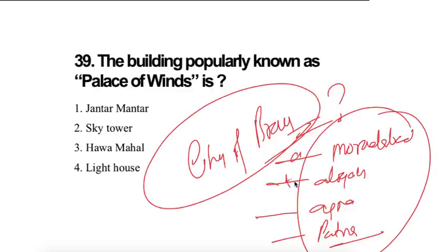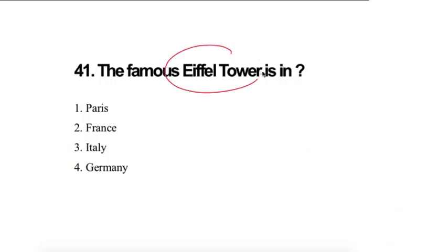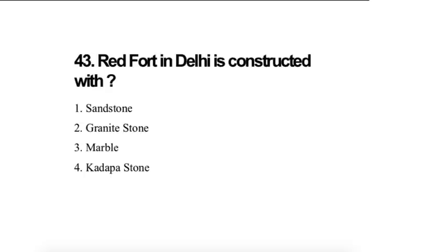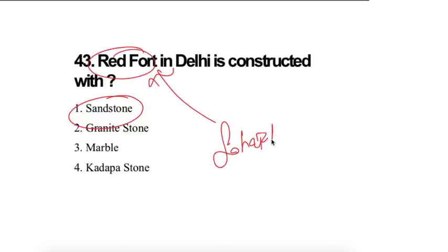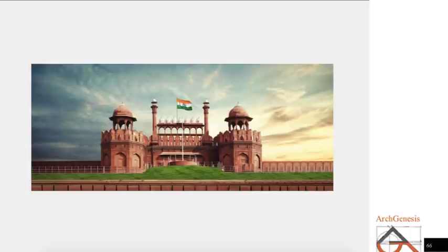Hawa Mahal look like this. Famous Eiffel Tower is in Paris. Architect is Eiffel and the height of the tower is 300 meters. A car needs a standard parking size of 2.5 to 5 meters. Red Fort in Delhi is constructed with red sandstone. Red Fort was built by Shah Jahan. Remember this thing, Shah Jahan built Taj Mahal and also built Lal Qila.